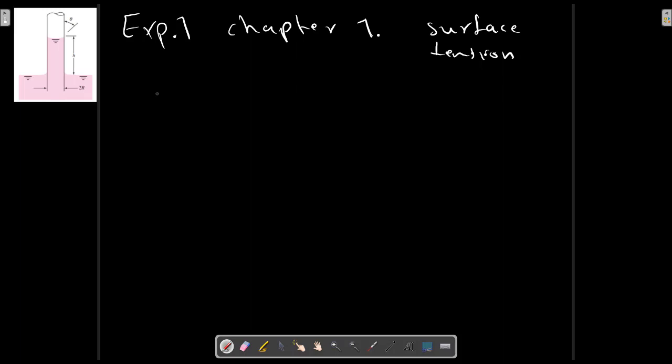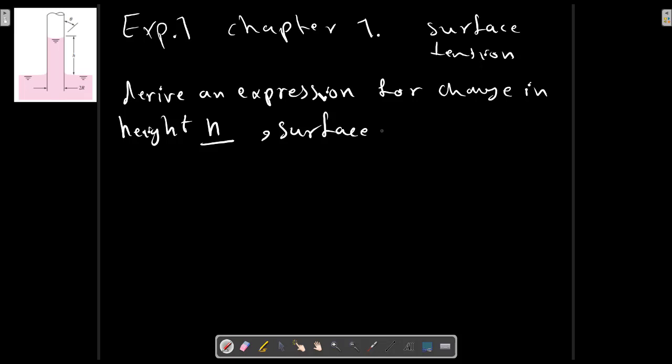Derive an expression for change in height H in a circular tube of a liquid with surface tension gamma, surface tension gamma, and contact angle theta.